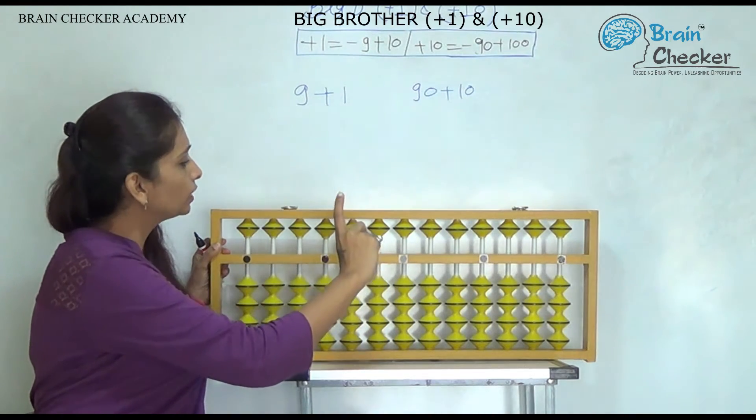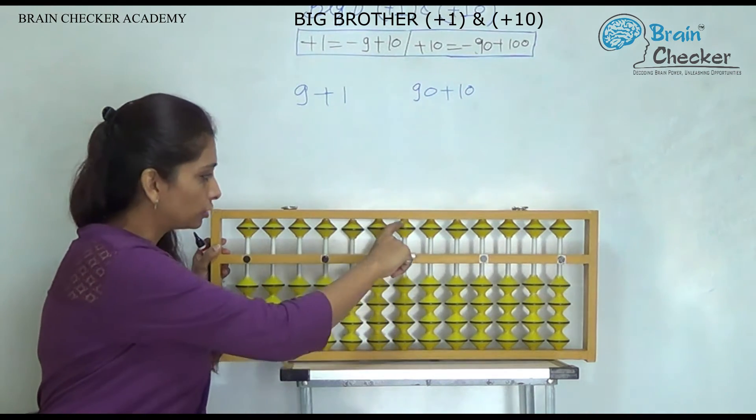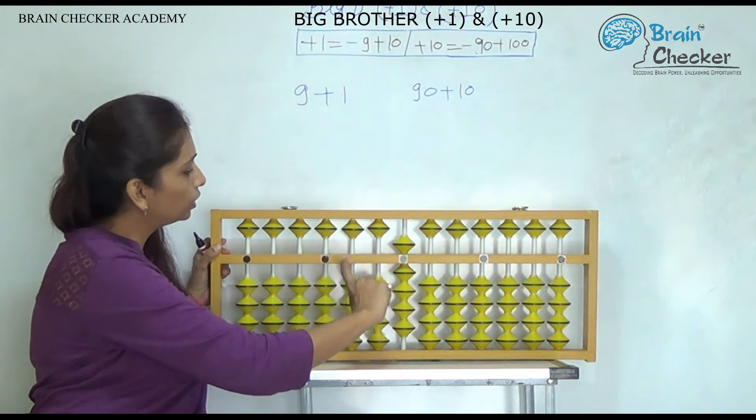So 9 plus 1, we will do it with the help of formula. So on unit rod, we will take 9, and to add 1,